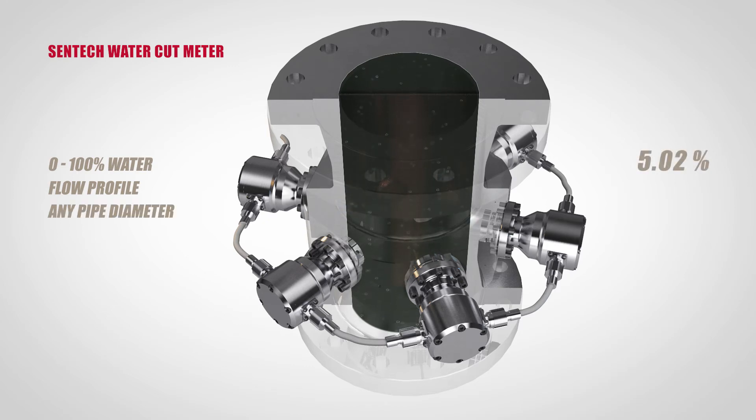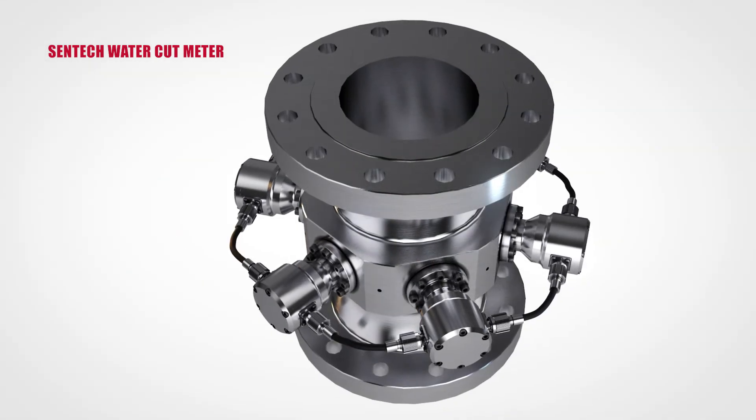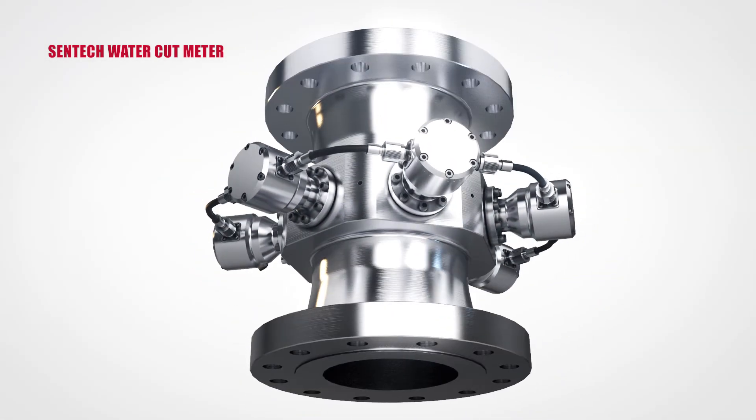The CENTEC WaterCut Meter introduces no flow restrictions or pressure drop and works equally well in multi-phase flow. It can thus be installed at each well to ensure immediate warning when production changes.